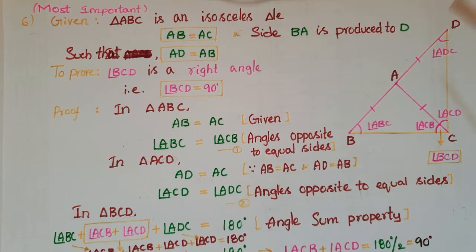Now see this figure. In triangle ABC, AB is equal to AC, so angle ABC is equal to angle ACB because angles opposite to equal sides are equal. In triangle ACD, AC is equal to AD.